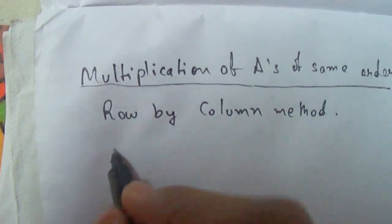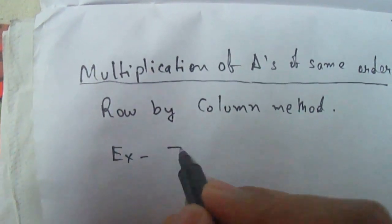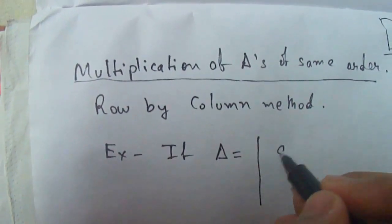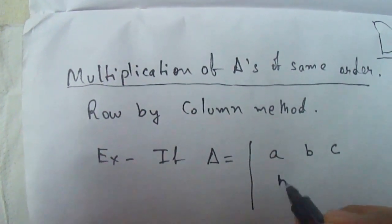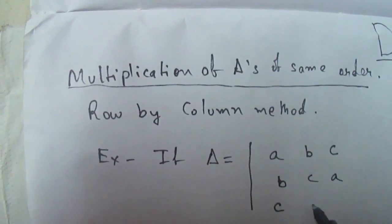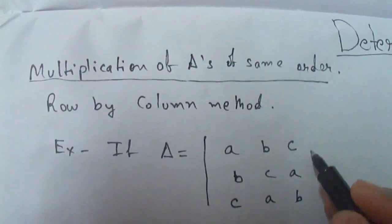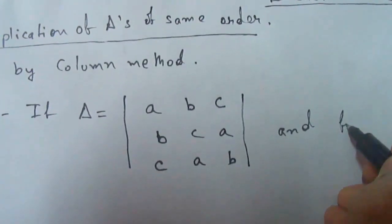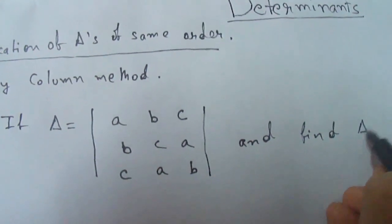To learn this let us take an example. For example, if del is given abc, bca, cab.